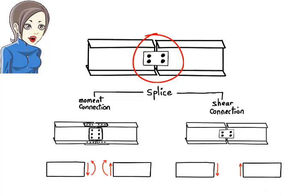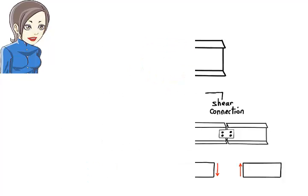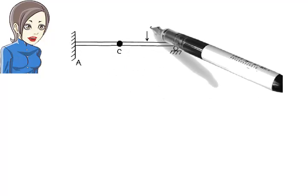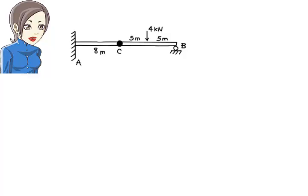In this section, we're going to focus on the analysis of beams that embody one or more internal hinges. Consider this beam. It is fixed at the left end and rests on a roller support at the right end. The beam has an internal hinge at point C.